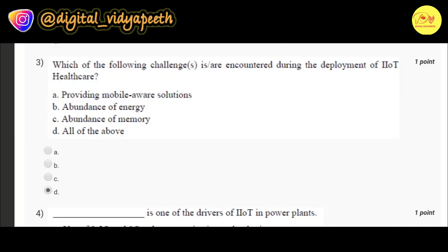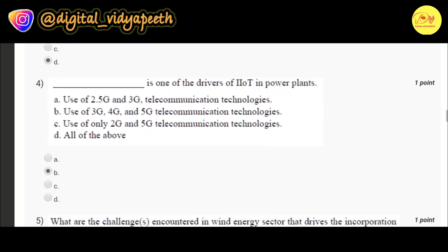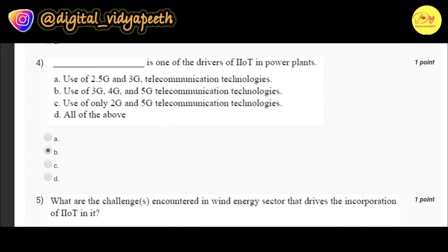Our fourth question is: Dash is one of the drivers of IIoT in power plants. Correct option is B, use of 3G, 4G and 5G telecommunication technologies.